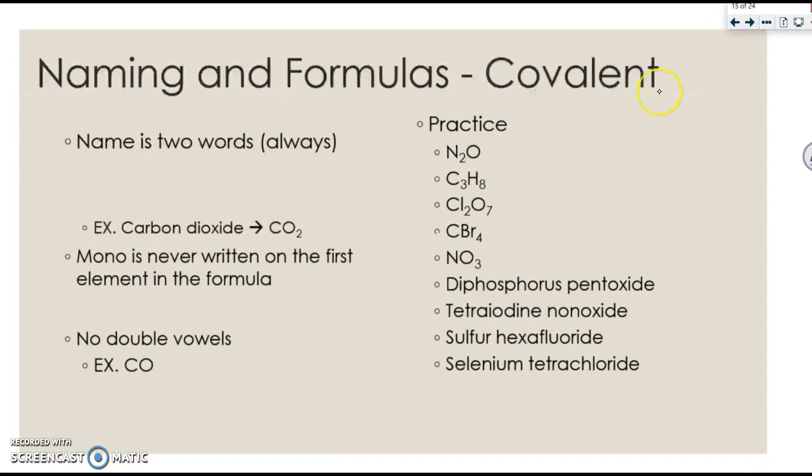When we name things that are covalent, the name is always two words. The first element, we always leave the same as before, so you take the name right off the periodic table. The second element, you change the ending to ide, always. These always end in ide. And you would put the prefix, if there needs to be one, the name of the element. You put the prefix, you put the second element name, just make sure you change its ending to ide.